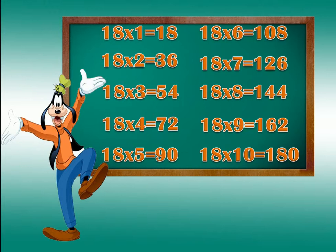18 sixes are 108. 18 sevens are 126. 18 eights are 144. 18 nines are 162. 18 tens are 180.